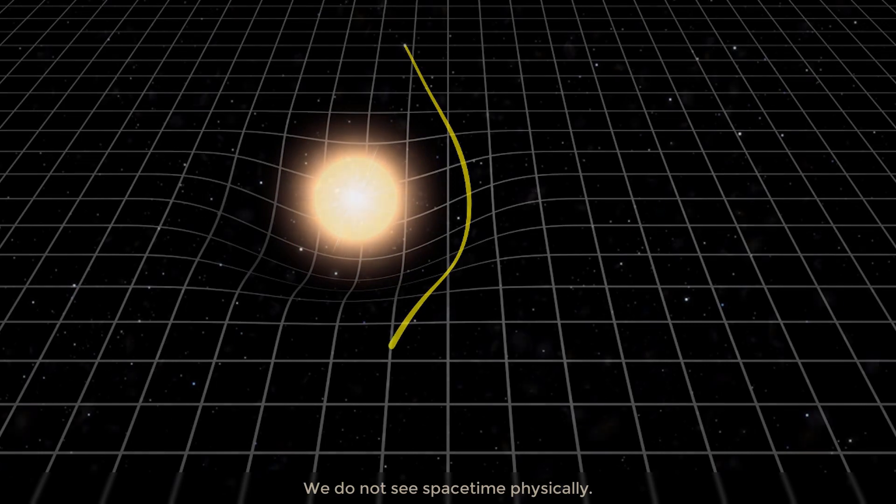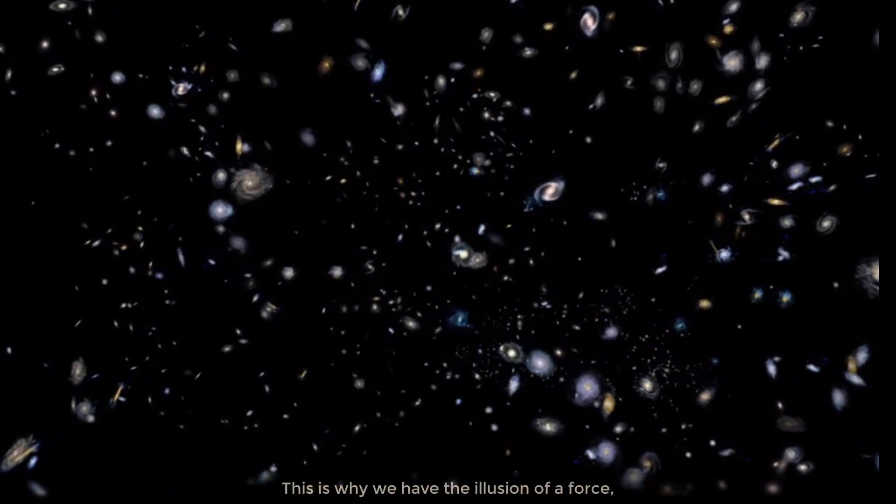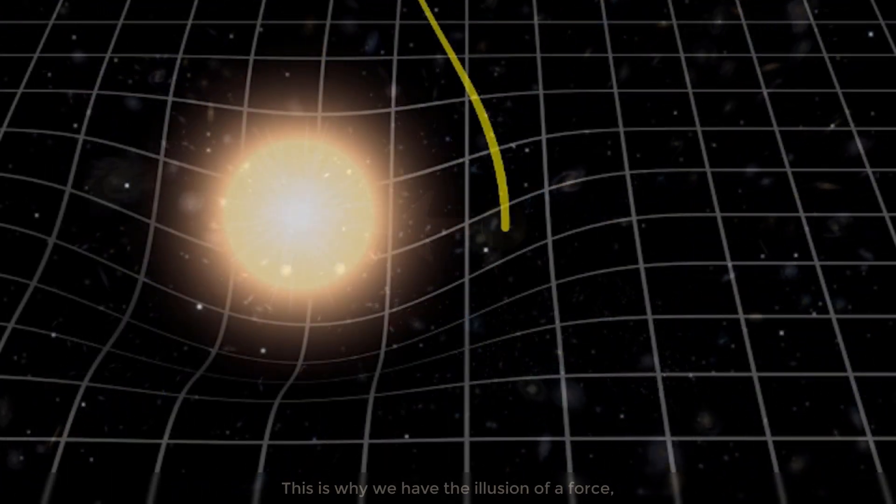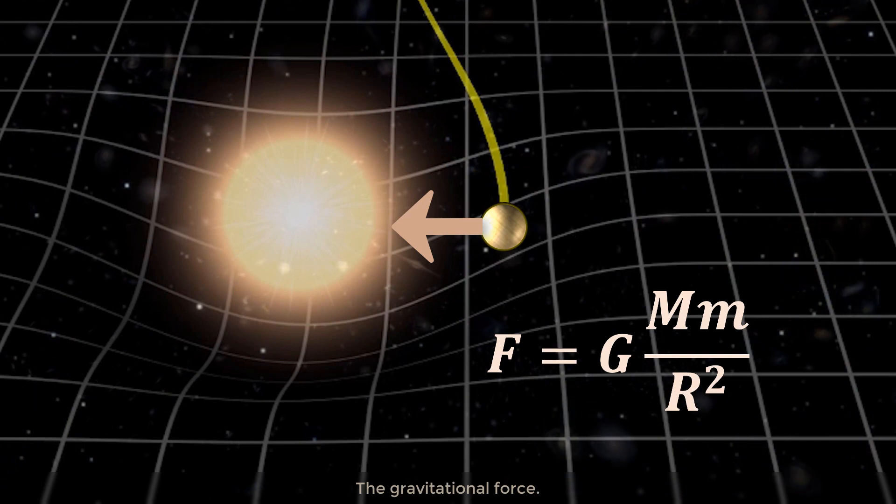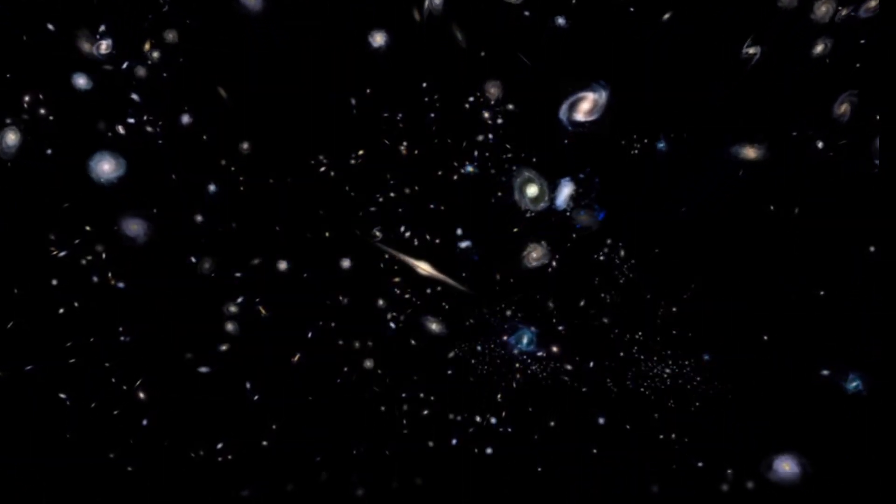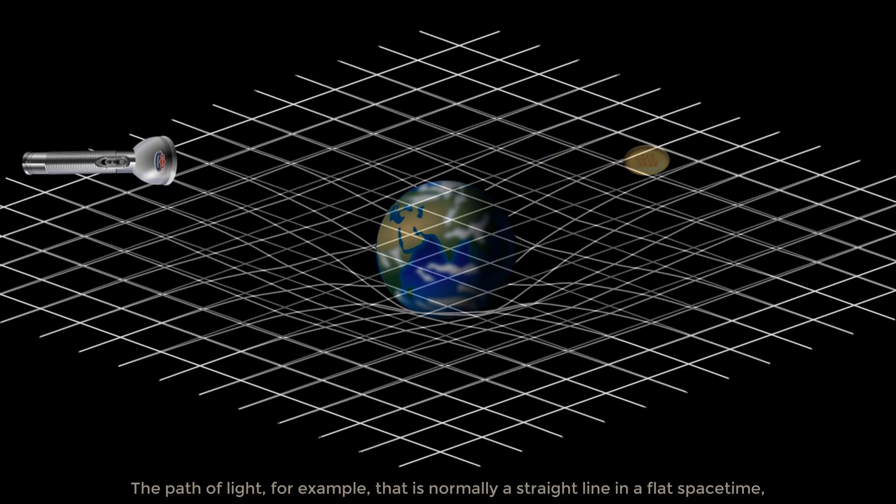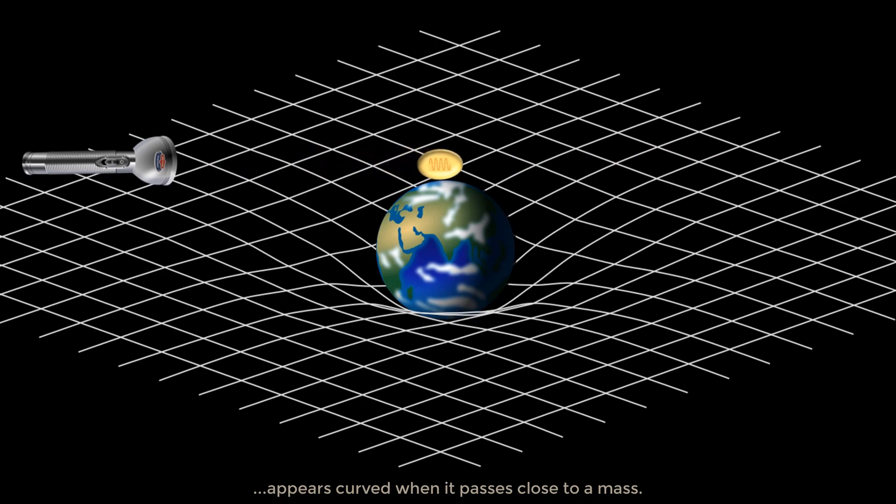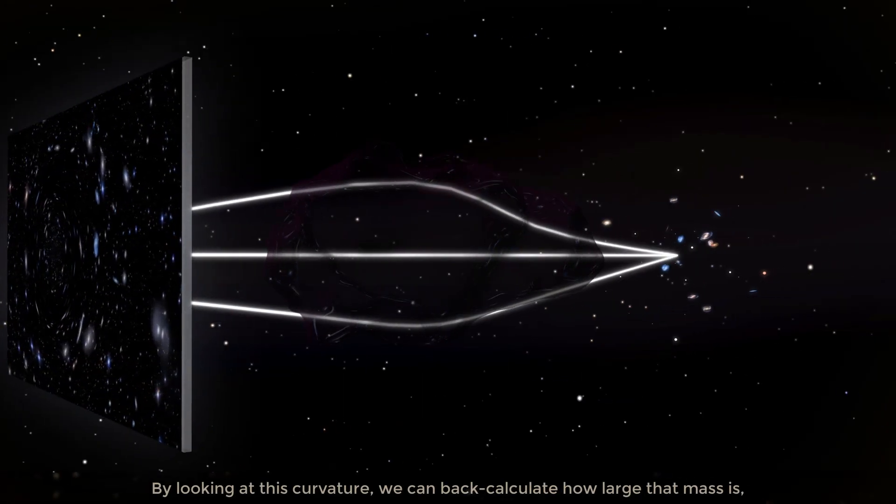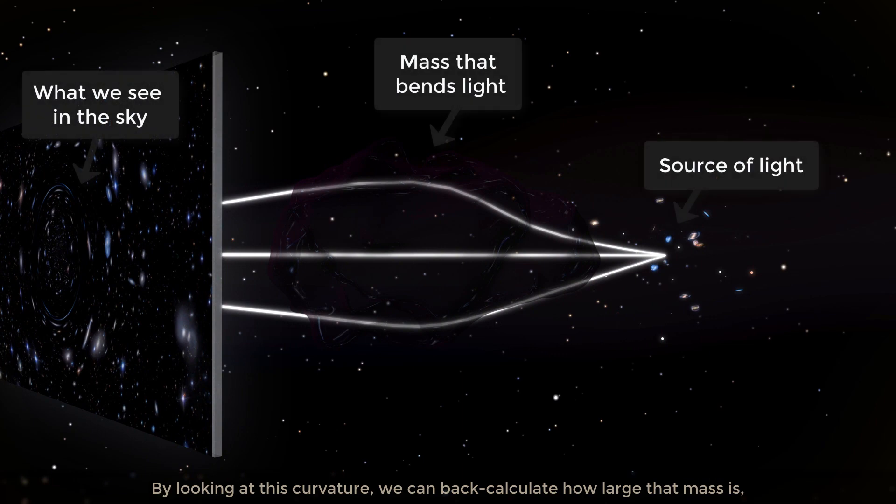We do not see space-time physically. This is why we have the illusion of a force, the gravitational force. The path of light, for example, that is normally a straight line in a flat space-time, appears curved when it passes close to a mass. By looking at this curvature, we can back-calculate how large that mass is and where it is located.